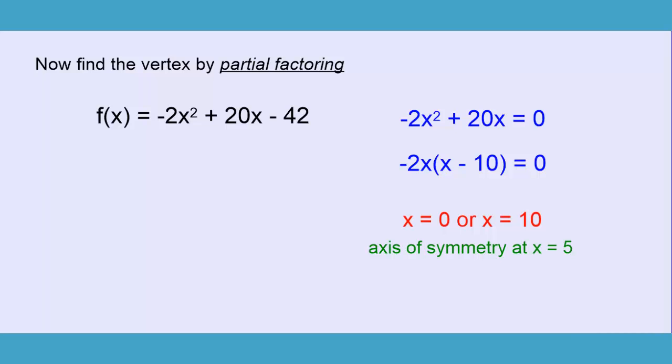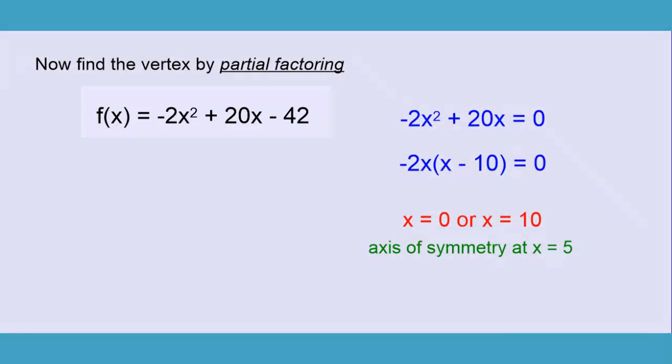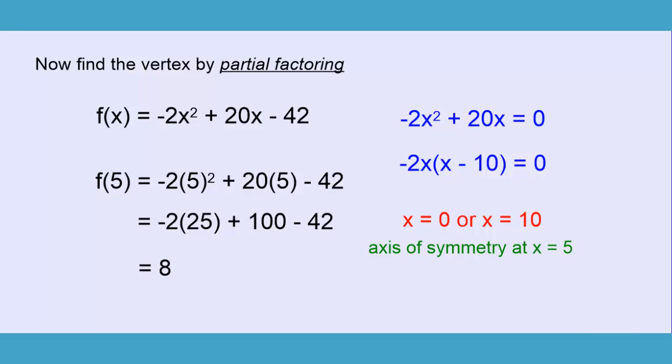So, how do we find the y value? Well, we can use our original quadratic function that's written in function notation. We just set x equal to 5 and then solve. And that will give us the y value of our vertex, or our optimal value. So, setting x equal to 5, we get f(5) equals -2 times 5² + 20 times 5 - 42. Which equals -2 times 25 + 100 - 42. Negative 2 times 25 is -50. So, this will all end up equaling positive 8. And look what we have. When x equals 5, y equals 8. Which was our vertex that we found when we were completing the square.